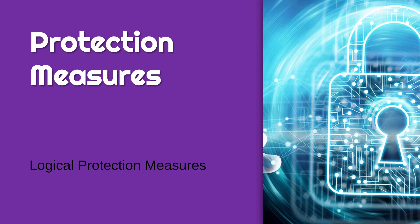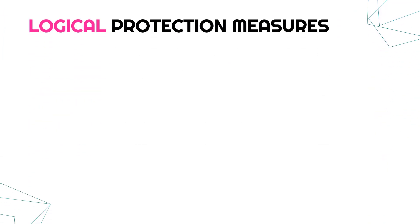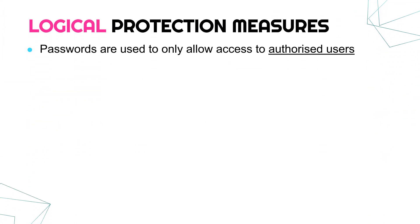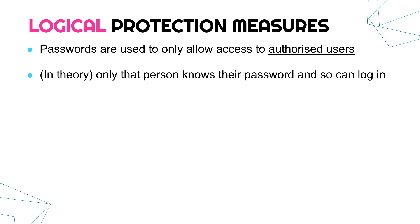We're going to continue our look at logical protection measures with a basic one — passwords. We all know what passwords are; we use them to enter our personal accounts. Passwords are there to only allow access to authorized users. Someone who is authorized has permission. For your email account, your school login, your YouTube account — only you should be authorized, only you should know that password.